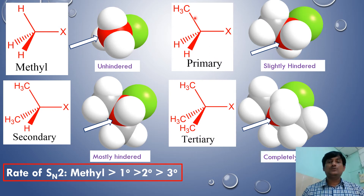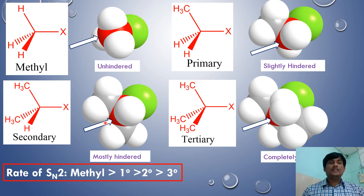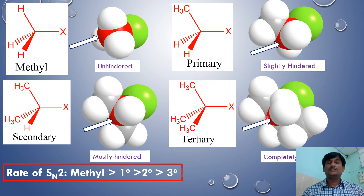When a methyl group is introduced in place of hydrogen (primary halide), the bulkier methyl group makes the approach of the nucleophile slightly more difficult, and the reaction center is slightly hindered. With two methyl groups (secondary halide), approach becomes very difficult and the center is mostly hindered. With three methyl groups (tertiary halide), the reaction center is completely blocked by three bulky methyl groups.